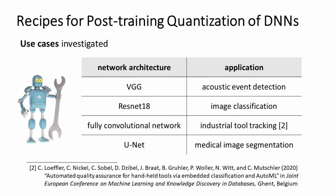We investigated four different use cases: a VGG architecture applied for acoustic event detection; ResNet-18 applied to image classification; a fully convolutional network applied for industrial tool tracking; and U-Net for medical image segmentation.